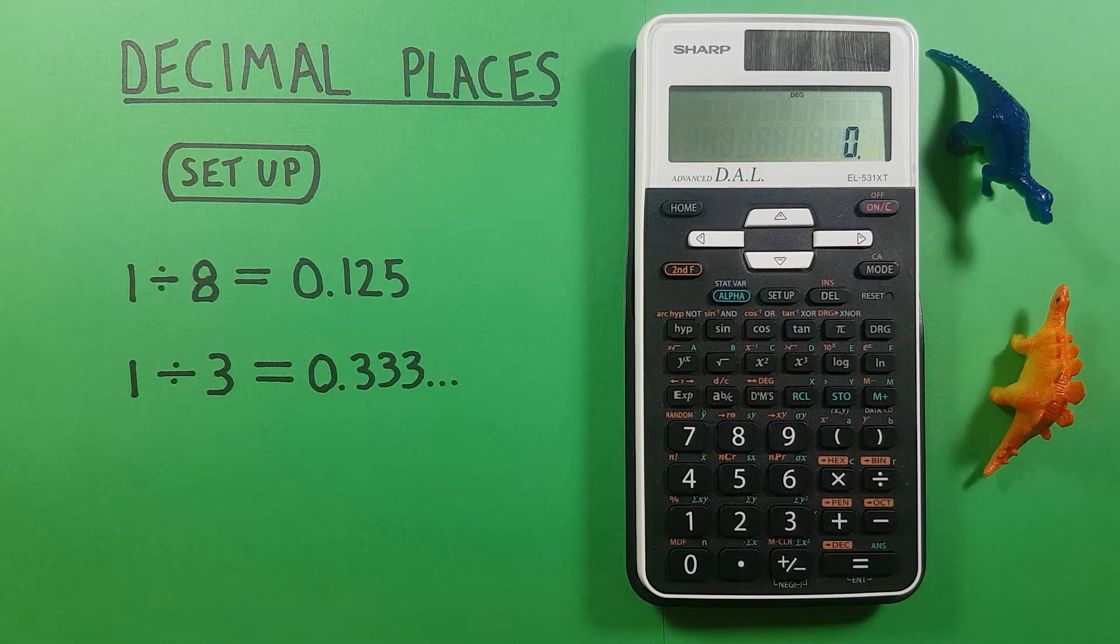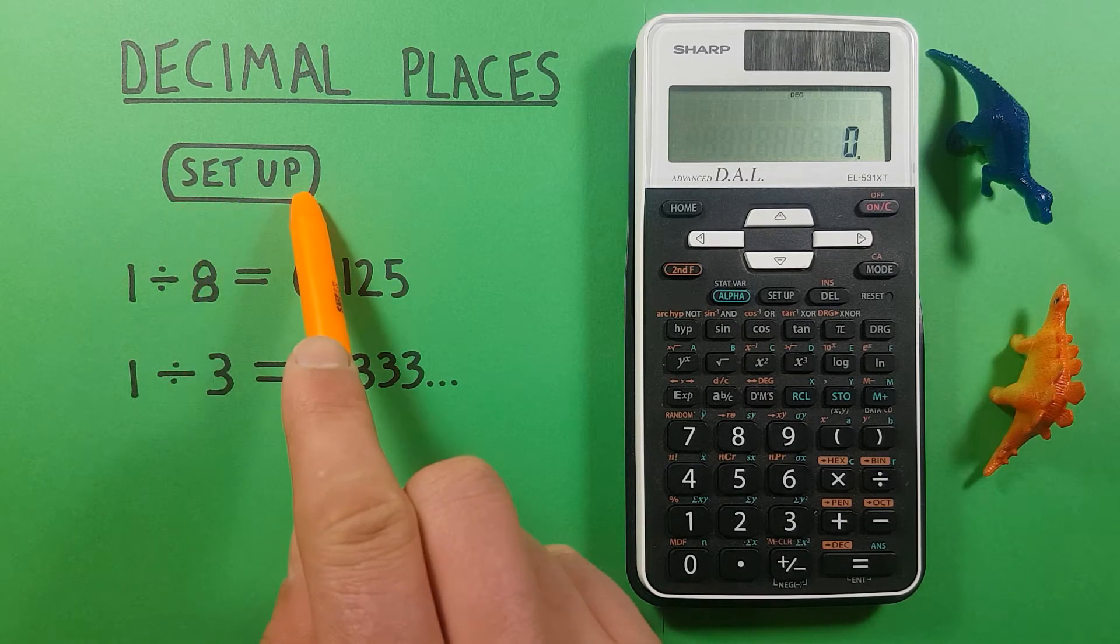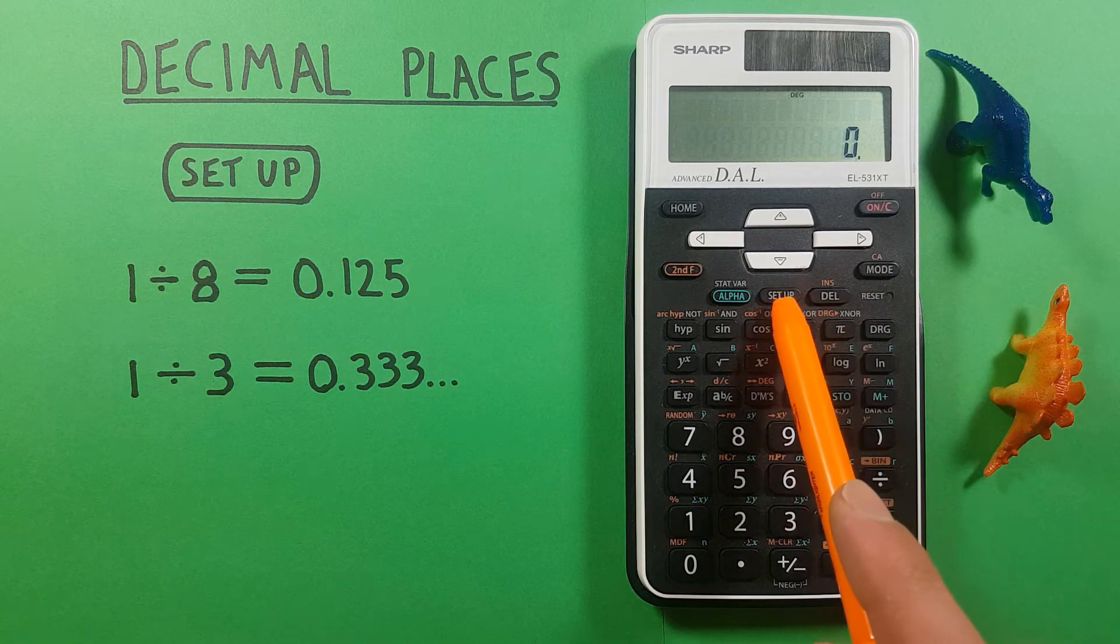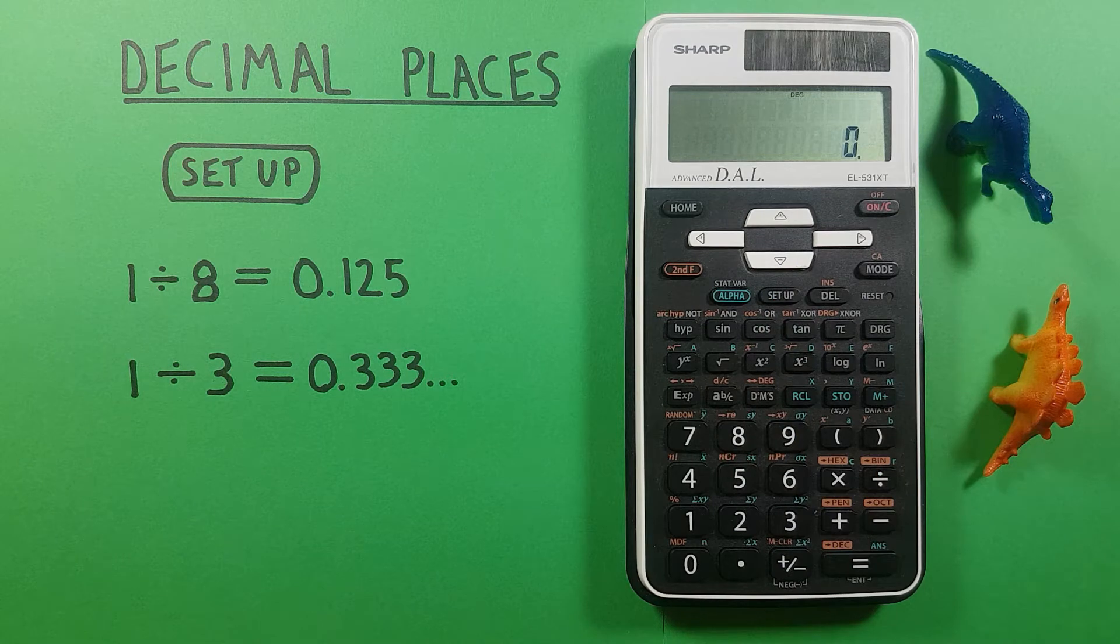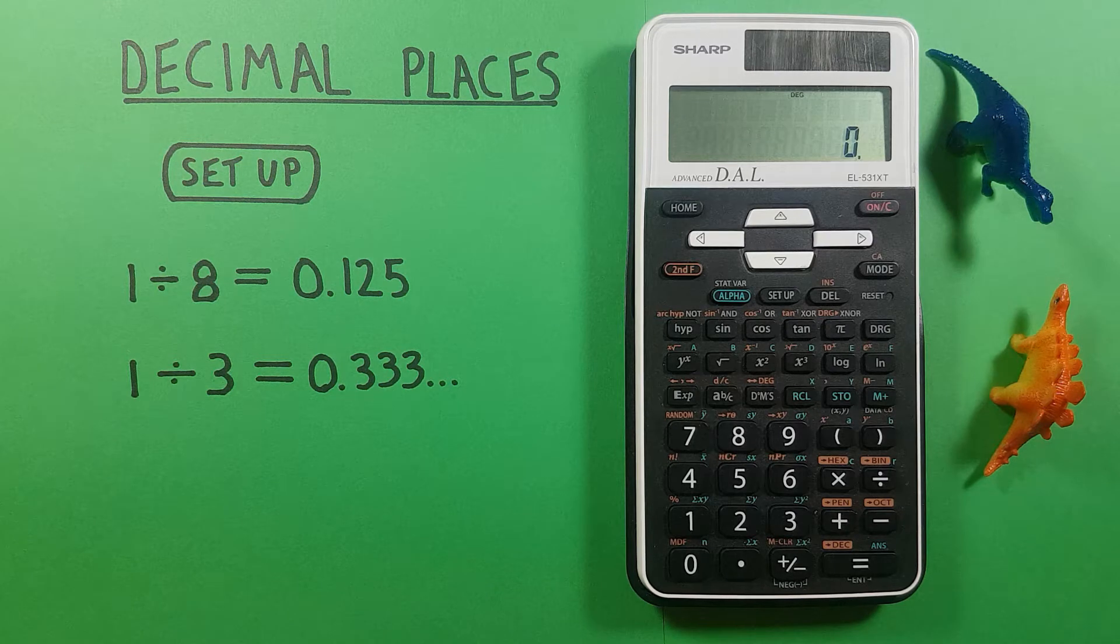To do that we'll use the setup key that looks like this located here. Now normally this calculator is in a mode called float mode where it displays however many decimals we need to give us the correct answer.